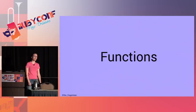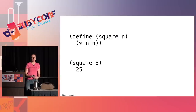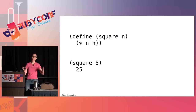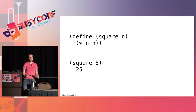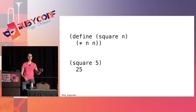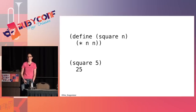To write your own functions in Racket, you use 'define' followed by the function name and argument list in parentheses, then the body of the function. For example: (define (square n) (* n n)). To call that function: (square 5) returns 25.